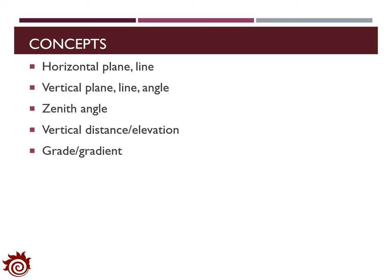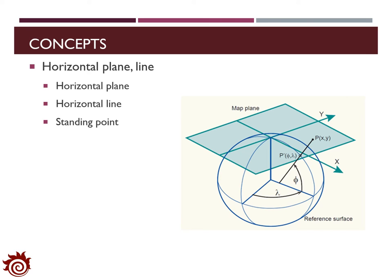Now we will go through some basic concepts used in this class, including horizontal plane and line, vertical plane, line and angles, zenith angle, vertical distance, elevation, and grade/gradient. For the horizontal plane and line, both are demonstrated in the figure on the right. Considering the surface of the Earth as a spheroid, the horizontal plane is a plane which is tangent to the surface of the Earth at the standing point, and any line on the horizontal plane is a horizontal line.